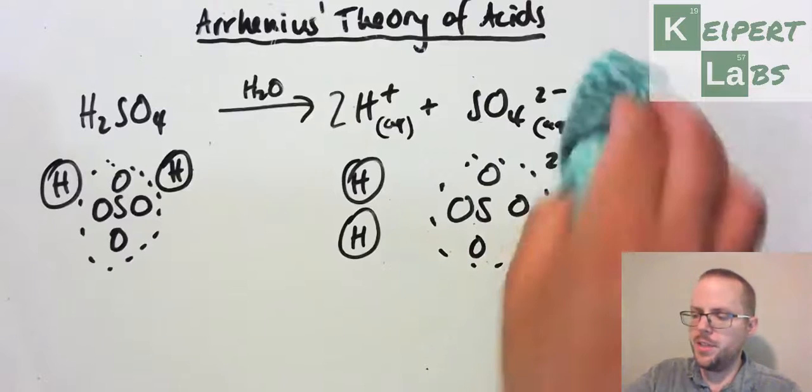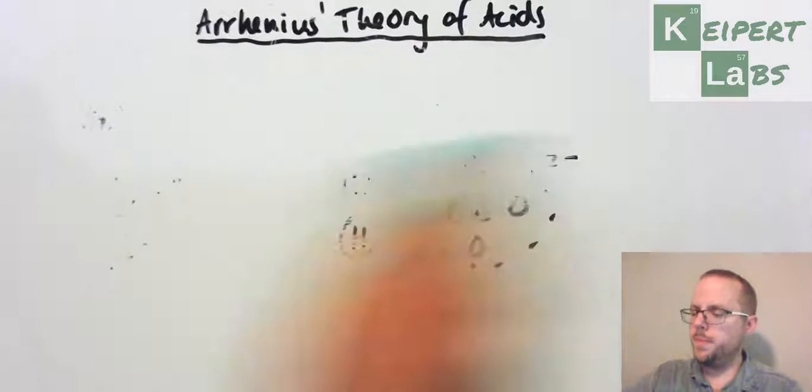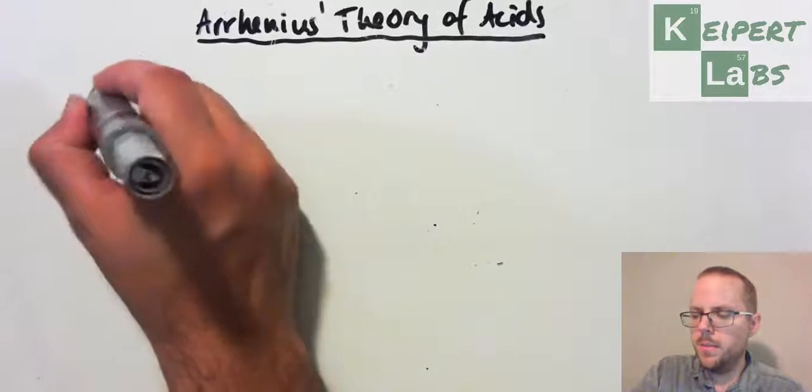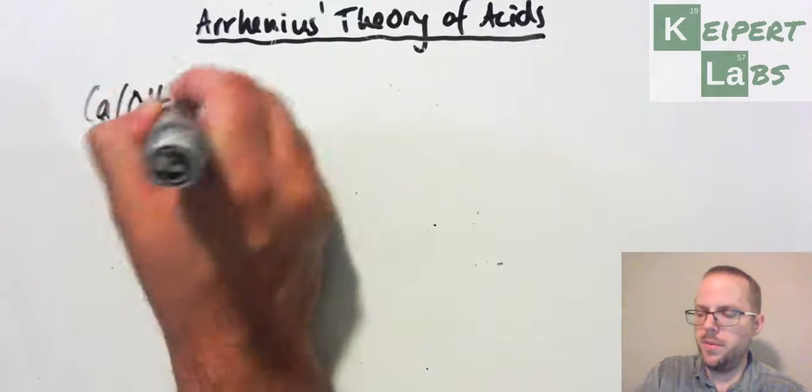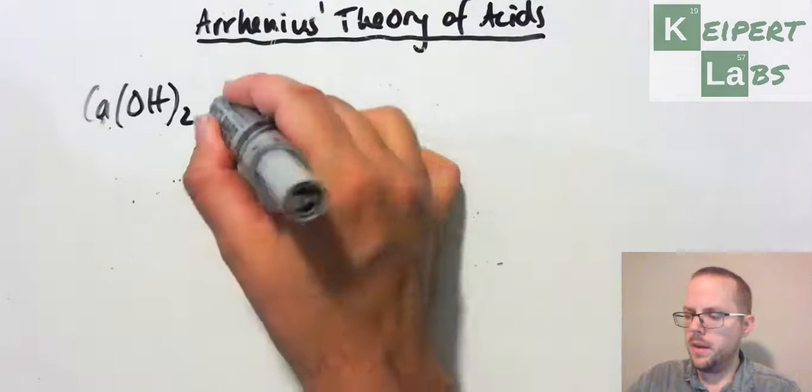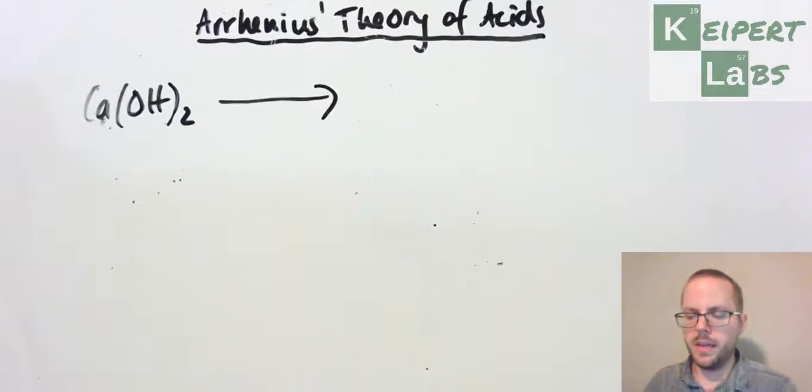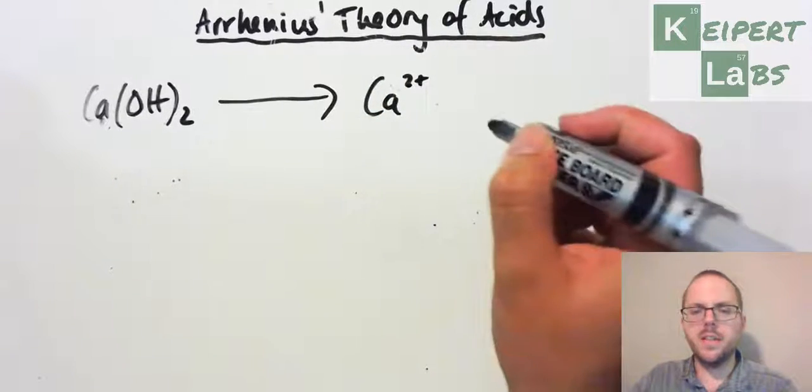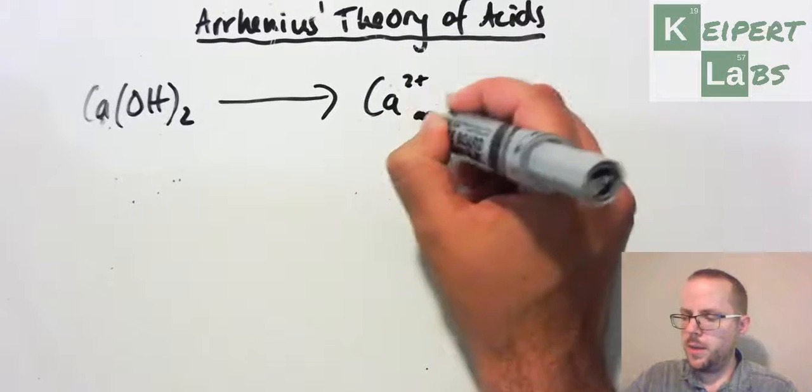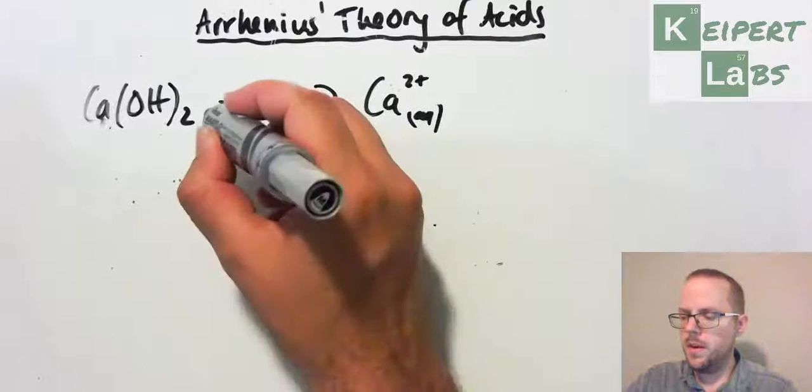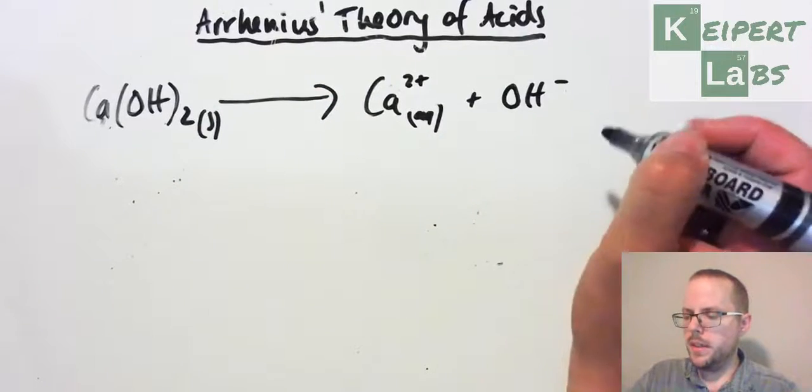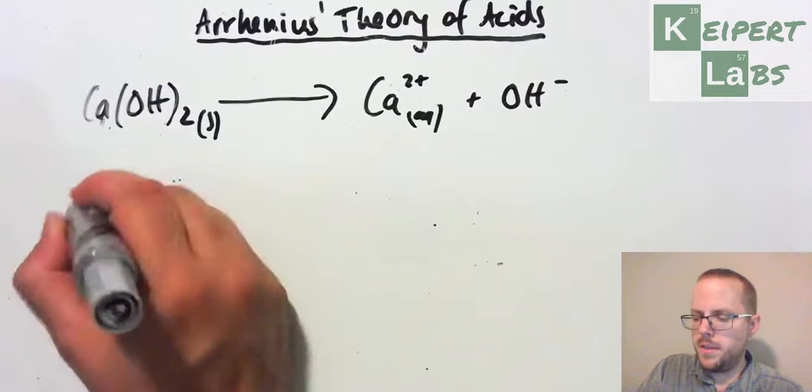Let's have a quick look at the second example, which is calcium hydroxide. We've got calcium hydroxide. Note the formula that we've got here. It's going to dissociate, so we've got our calcium ion, two plus because it's in group two, and it's aqueous. And then I'm going to get my hydroxide ion.